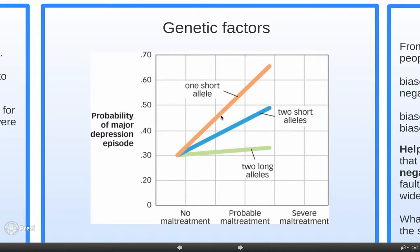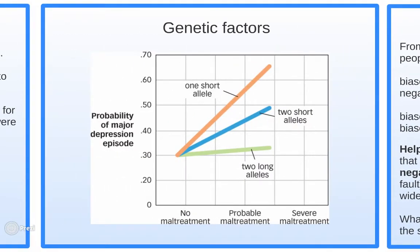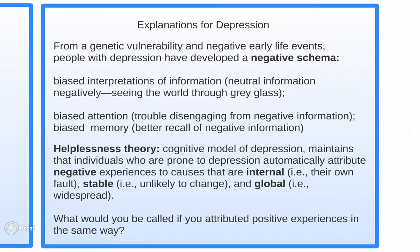There are genetic factors regarding a particular allele. If you have one short allele, you are more likely to experience a major depressive episode. This also relates to the diathesis-stress model: under conditions of high maltreatment — such as an abusive household — and severe maltreatment, you are more likely to experience depression if you have a short allele versus two long alleles. This relates to individual differences in susceptibility to depression.